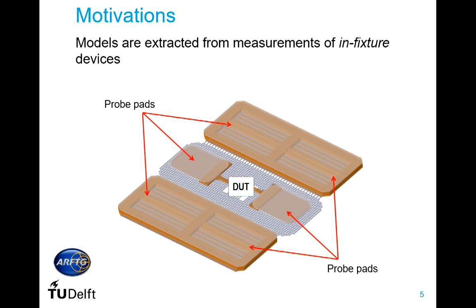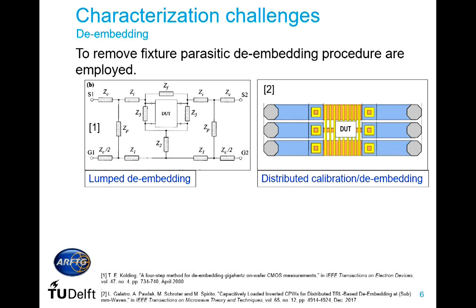If we have the test fixture, we have to remove it from our measurement in order to get the intrinsic parameters of our device. There are two main approaches to de-embed this test fixture: one is lumped de-embedding, which uses lumped components to describe the behavior of the test fixture, and on the other side there is distributed calibration, which allows directly referencing the calibration to the device level.